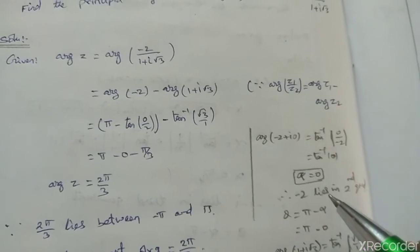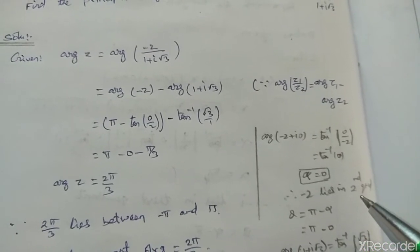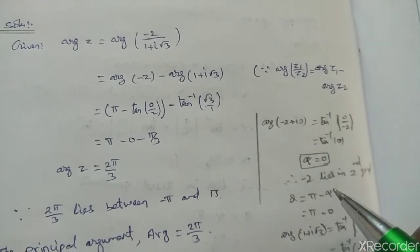Minus 2 lies in the second quadrant, so theta equals pi minus alpha.